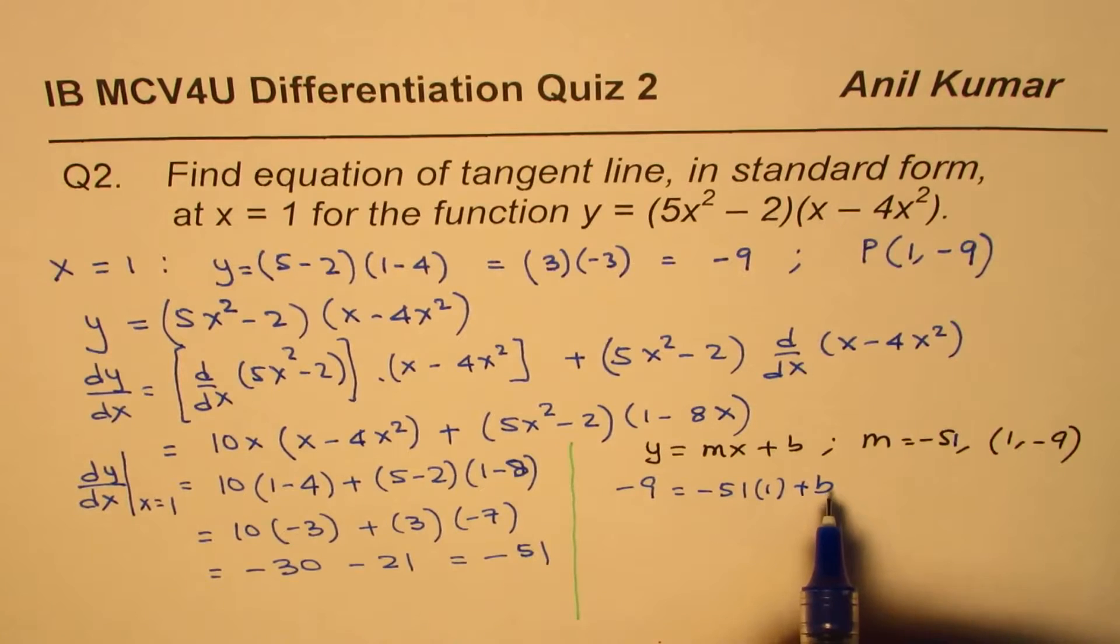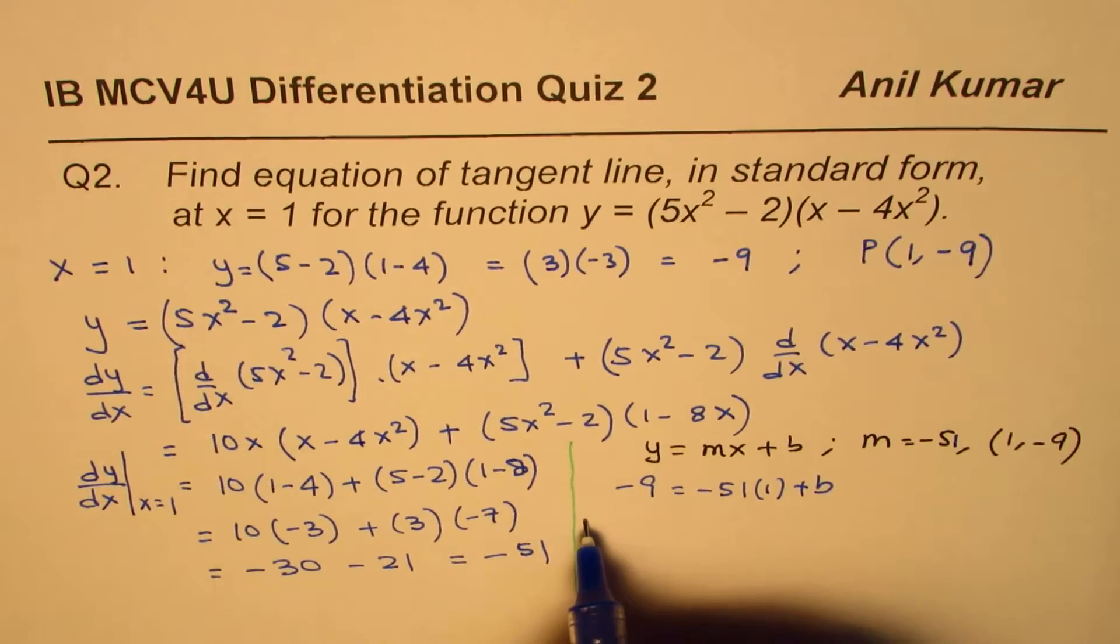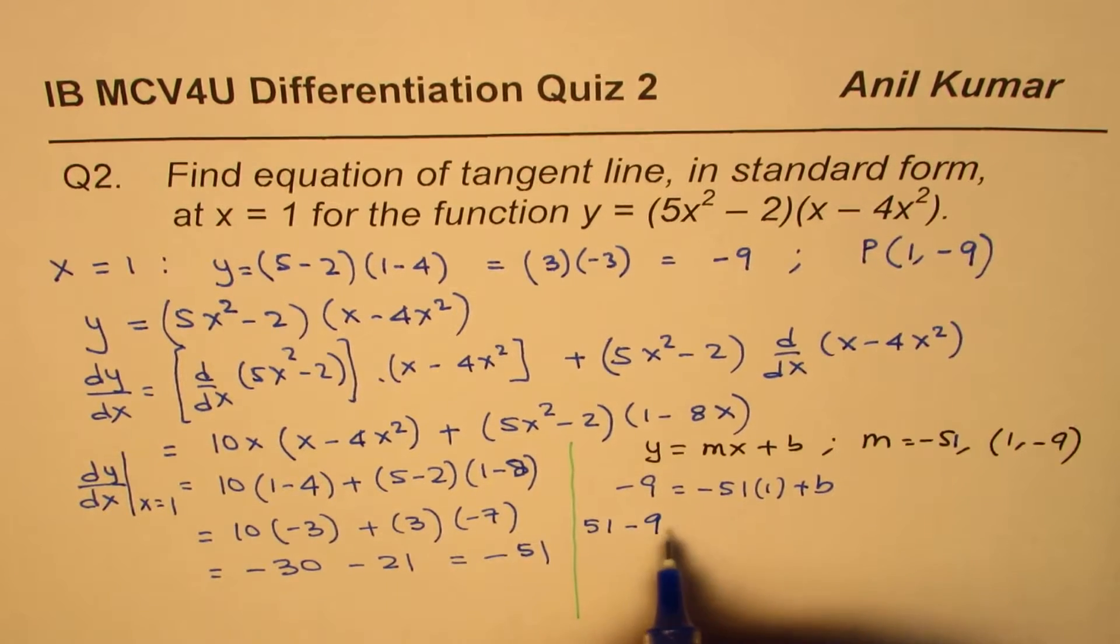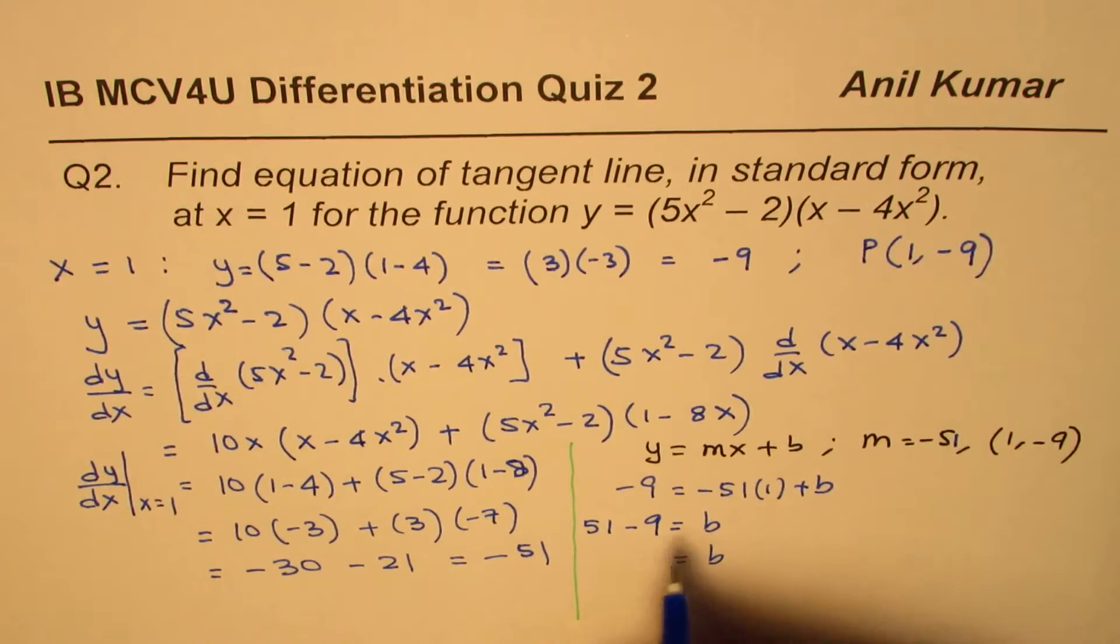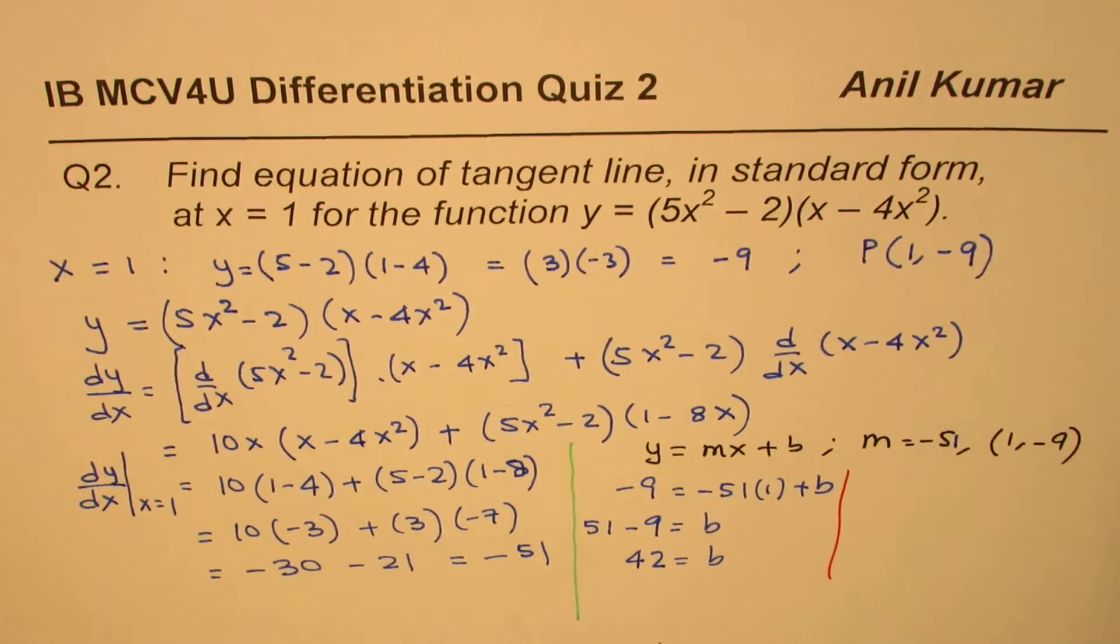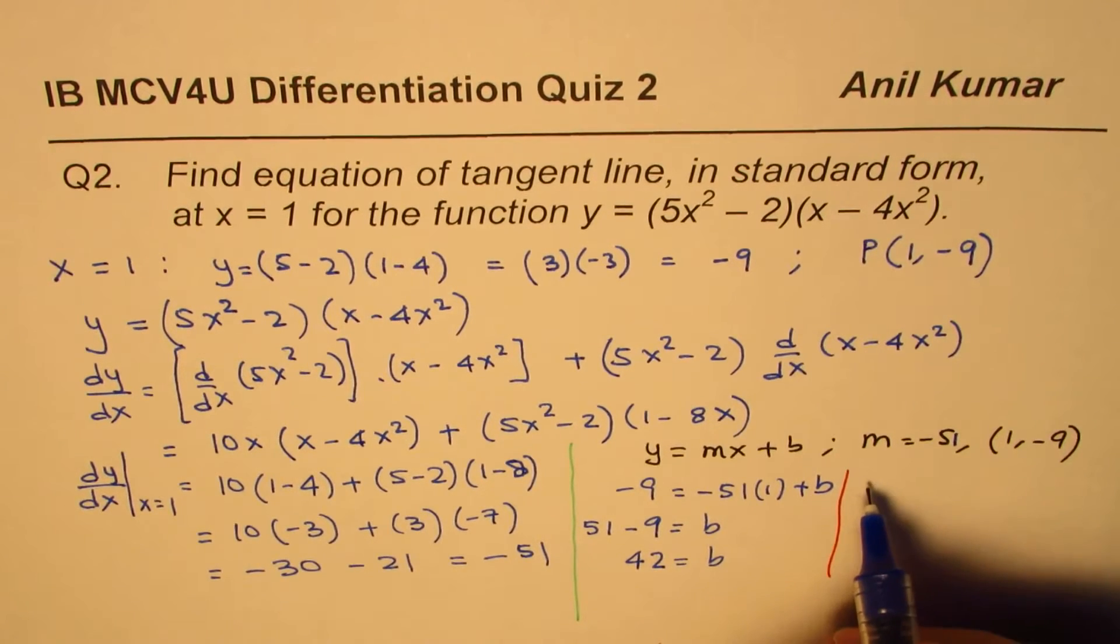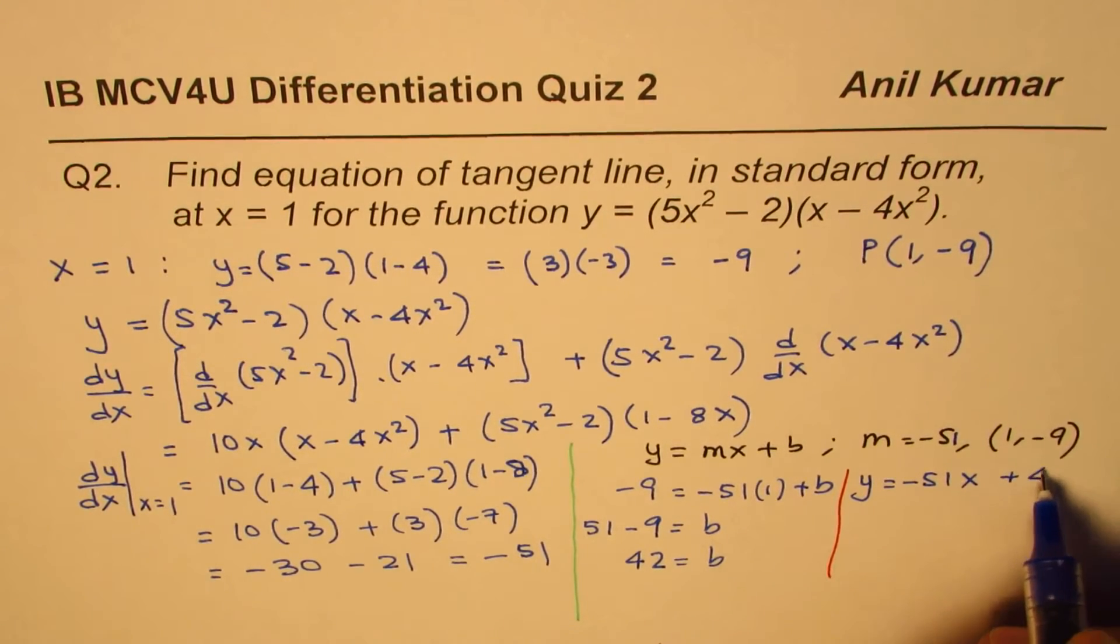To get the value of b, we can simplify this expression, bringing these terms to the left side, we get 51 minus 9 equals b. So the value of b is 42. So once you get the value of b, you can always write down the equation. Equation of the line is y equals slope minus 51, x plus 42.